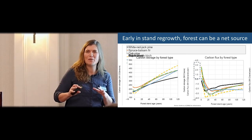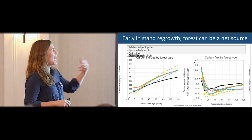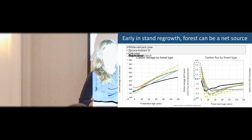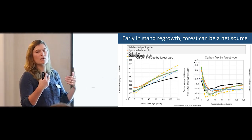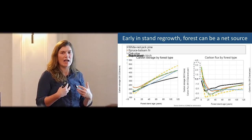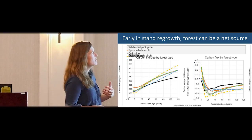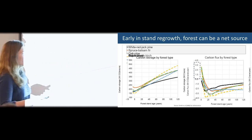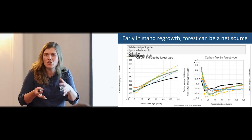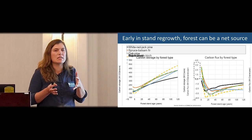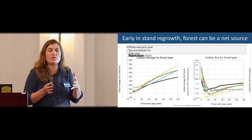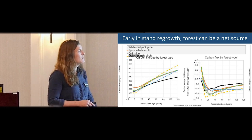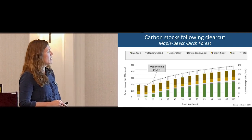I show these with the y-axis in reverse from how Bill showed it — positive numbers here are emissions, negative numbers are sequestration — representing it as mitigation potential. Across these forest types, there is an initial early period of emissions: these forests are net sources of carbon dioxide early in stand regrowth.